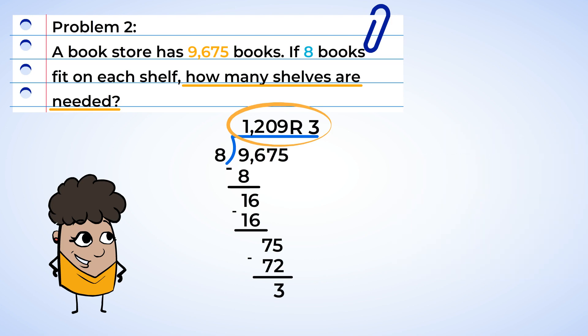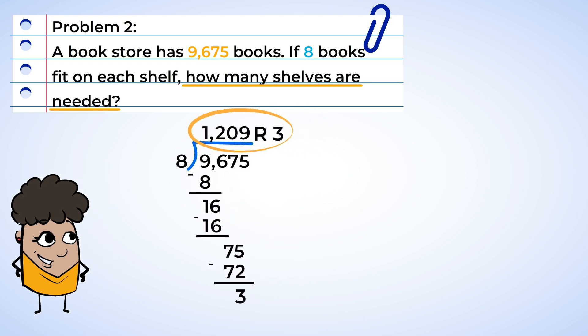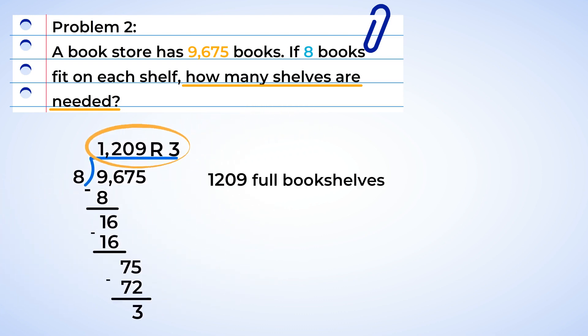Check the problem again. They ask you how many shelves are necessary for all of the books. Well, the bookstore needs 1,209 shelves that'll all be full and an extra shelf for these three remaining books. Or in total, 1,210 shelves. And to be safe, let's just check the division because, well, you know, digits have the ability to play tricks from time to time.